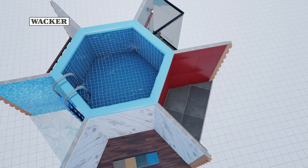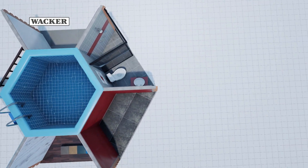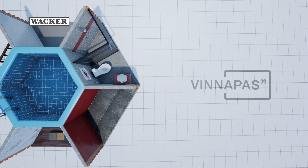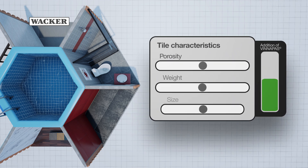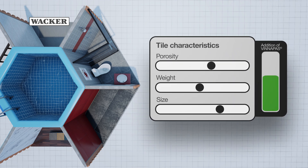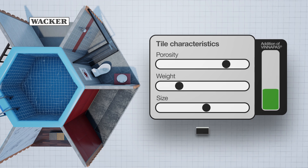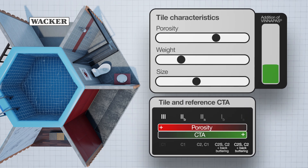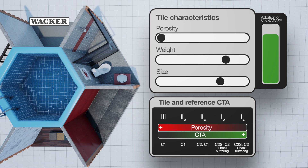Modern tiles need modern tile adhesives. Tile adhesive modified with Vinopas dispersible polymer powders is the perfect solution. The polymer content should be adjusted to the class of tile as regards its porosity and size. As a general rule, the lower the porosity of the tile, the higher the polymer content. Tile adhesives modified with Vinopas dispersible polymer powders perform to an optimum extent.